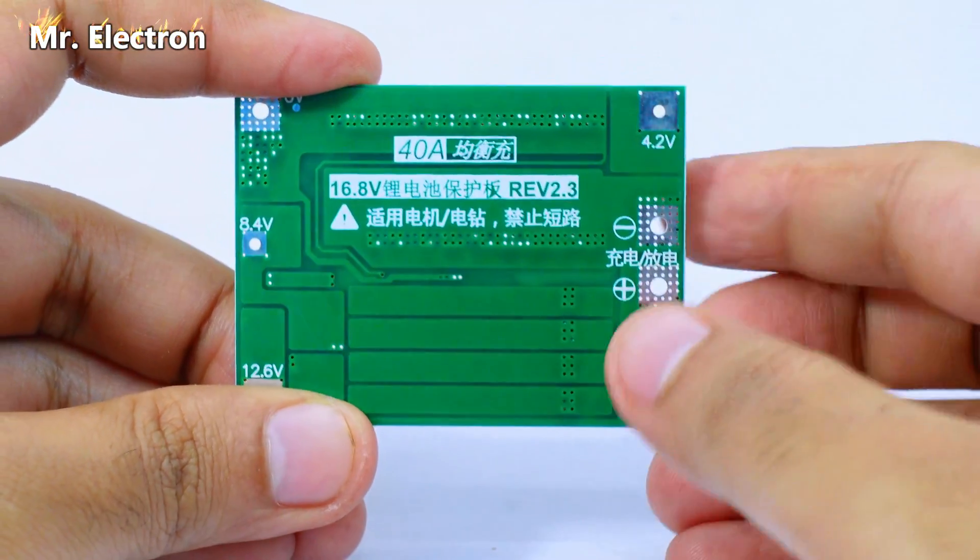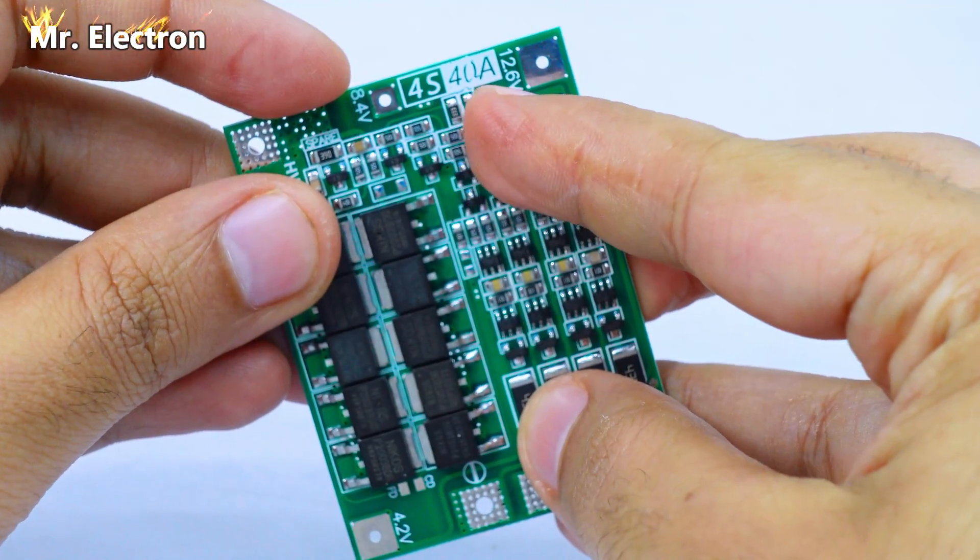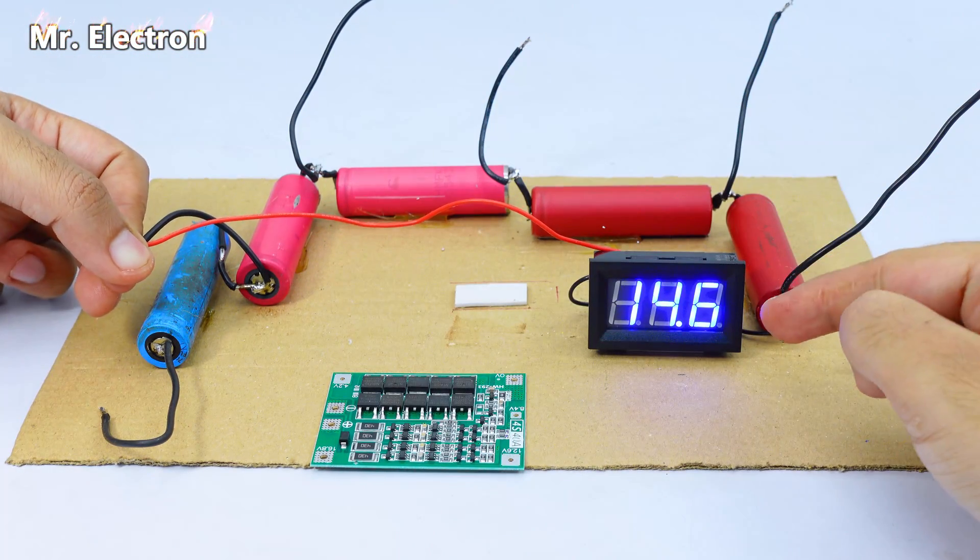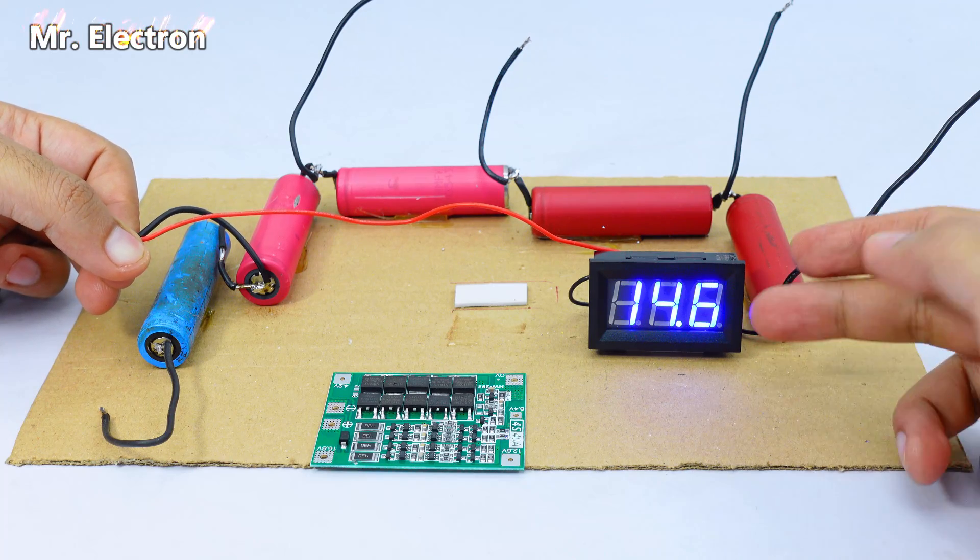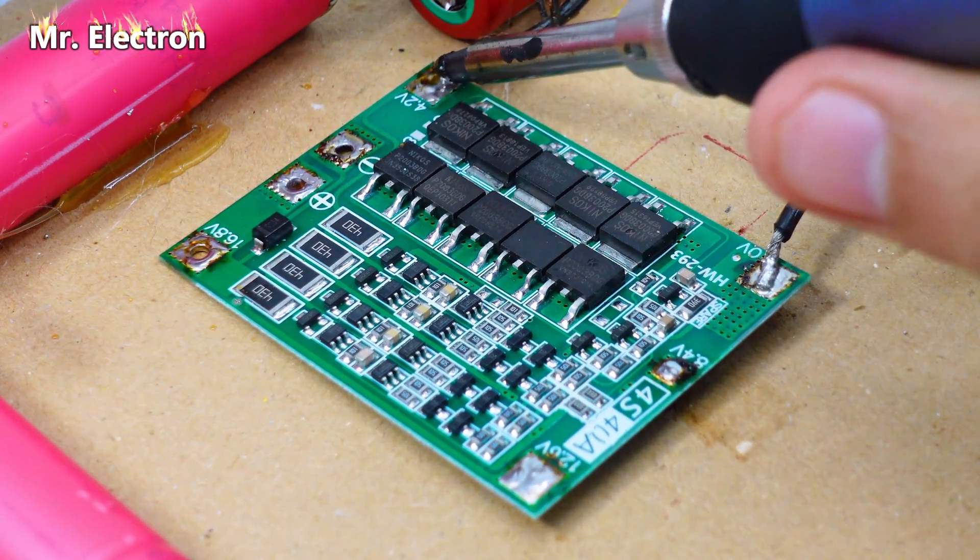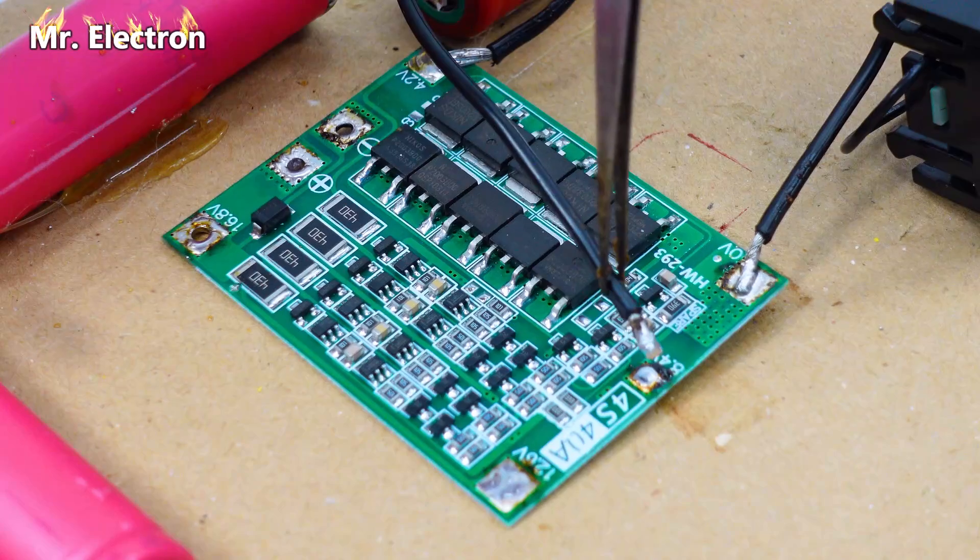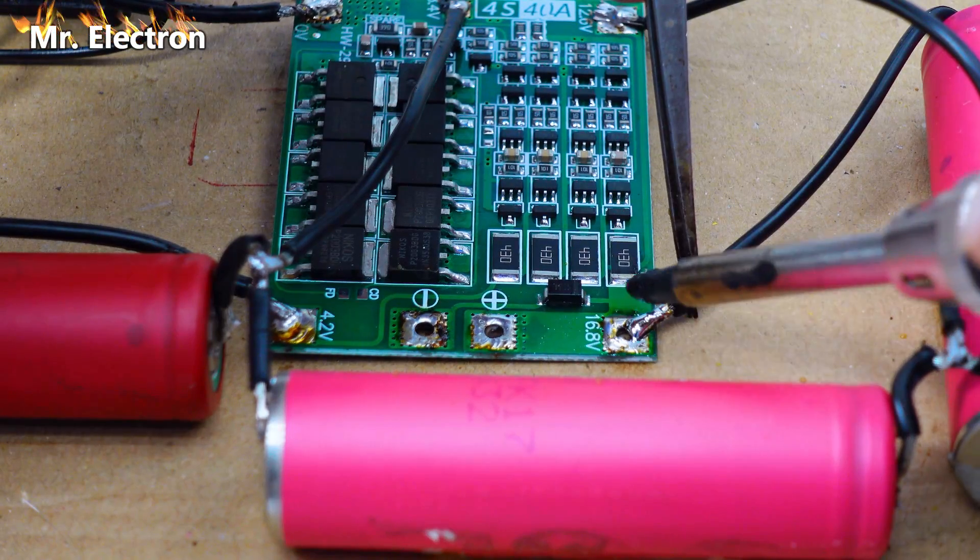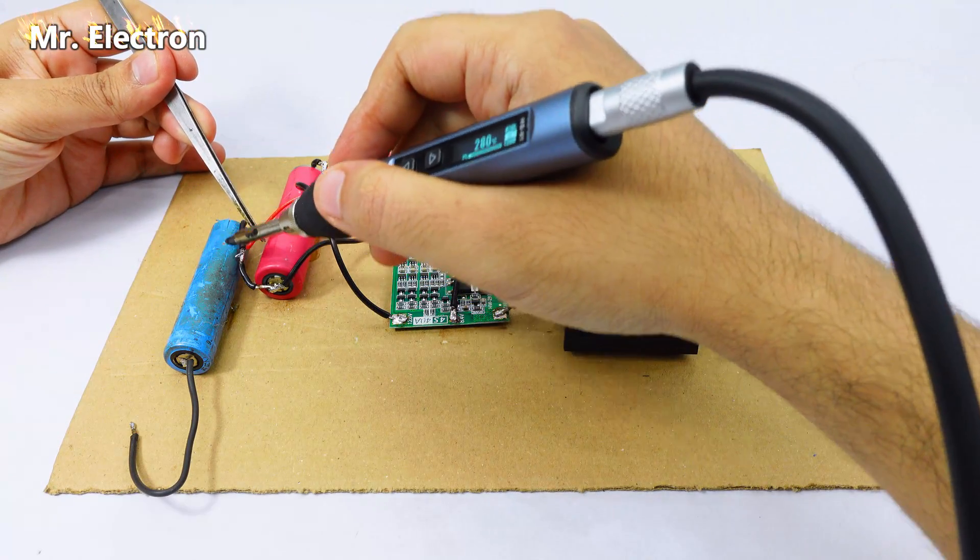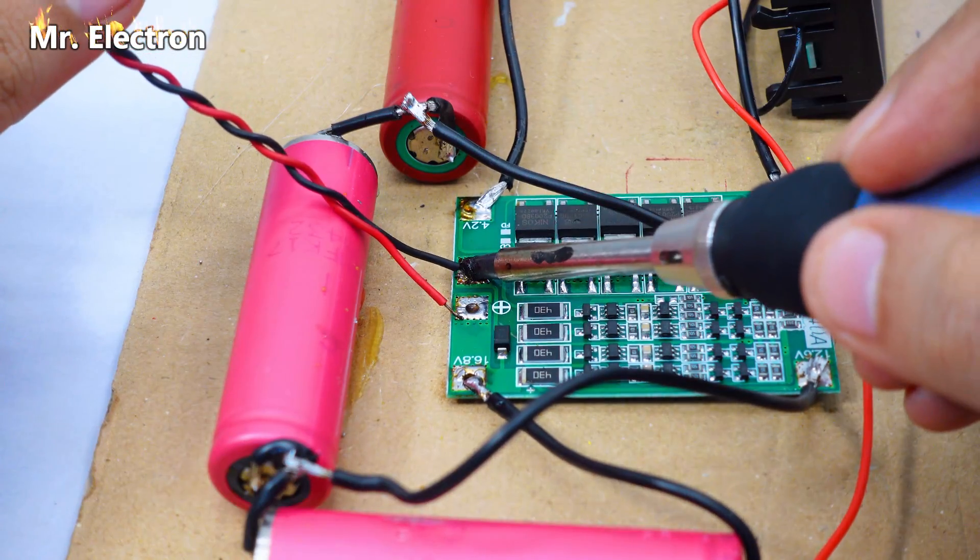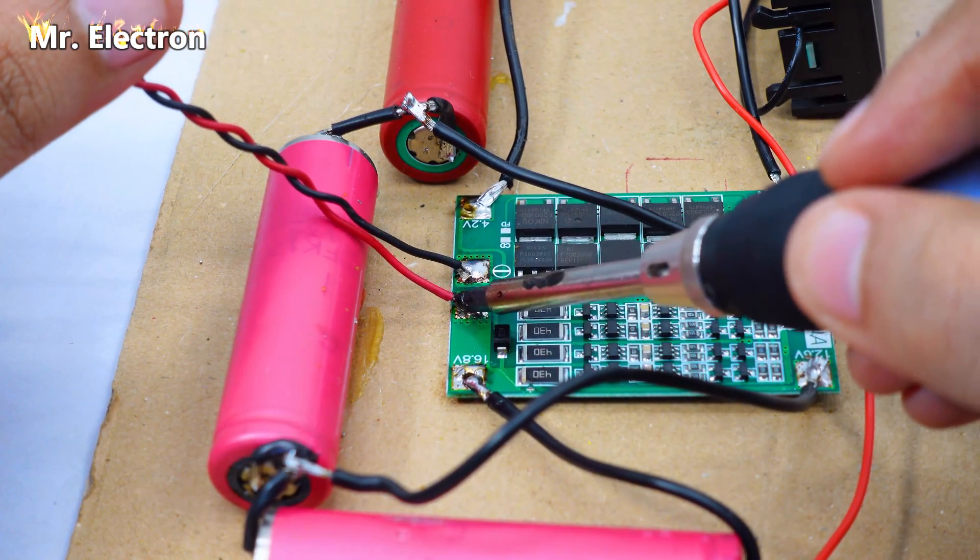Next I'm going to do the same test on the 16.8 volts 40 amperes 4S BMS. And for that this time I will be using four cells which will together make up to 14.6 volts, but it's discharged, so it should be 16.8 volts maximum as it was on this BMS. Finally it is time to solder the last wire which is of the voltmeter, and as you can see the meter is flashing 14.6 volts which means that it needs charging. And lastly the overall output wires.